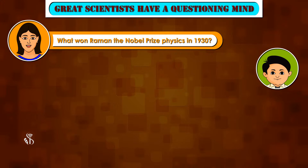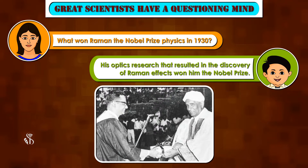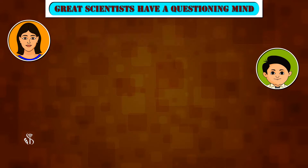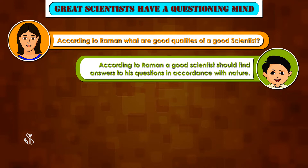What won Raman the Nobel Prize in Physics in 1930? His optics research that resulted in the discovery of the Raman effect won him the Nobel Prize. According to Raman, a good scientist should find answers to his questions in accordance with nature.